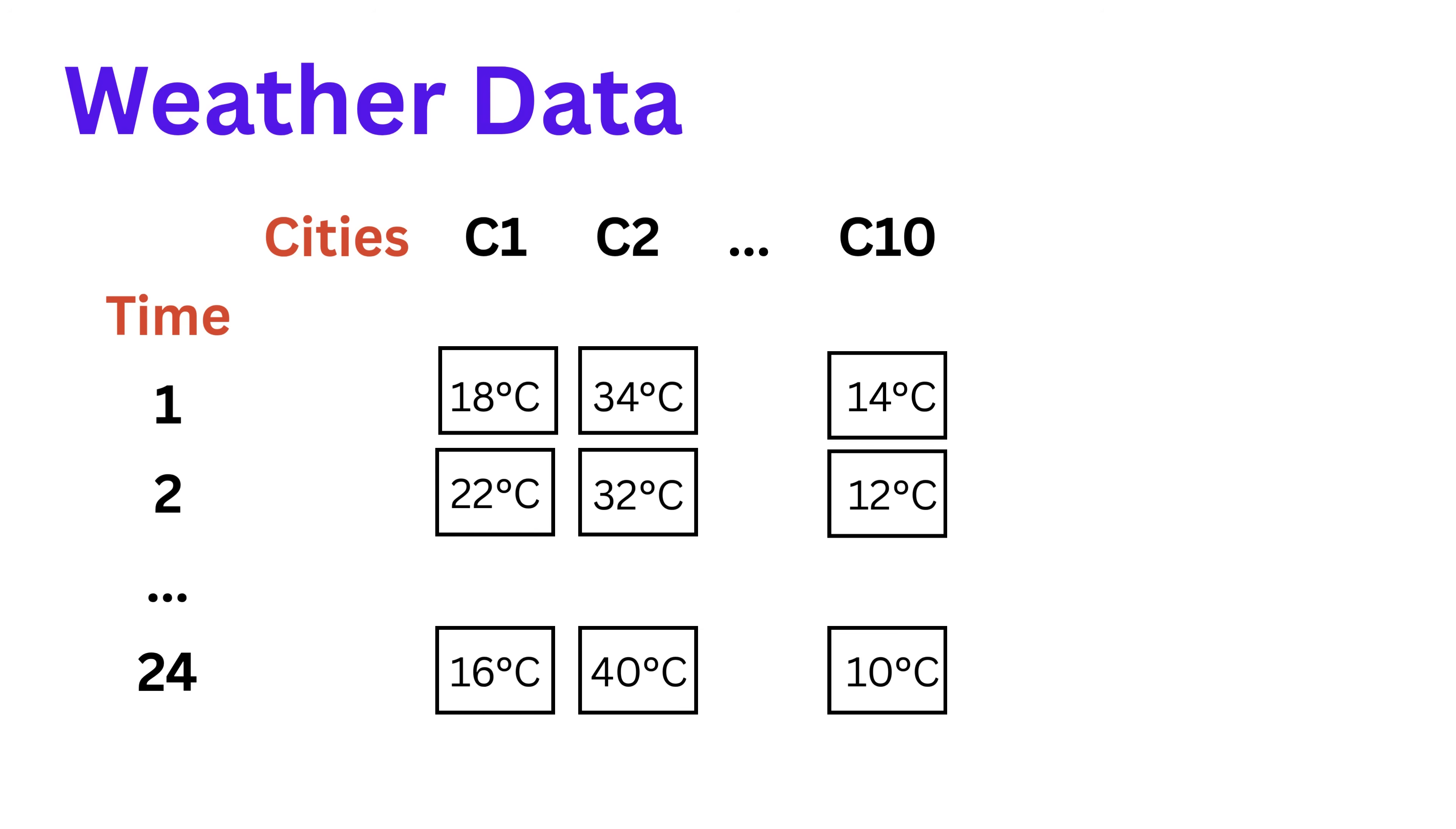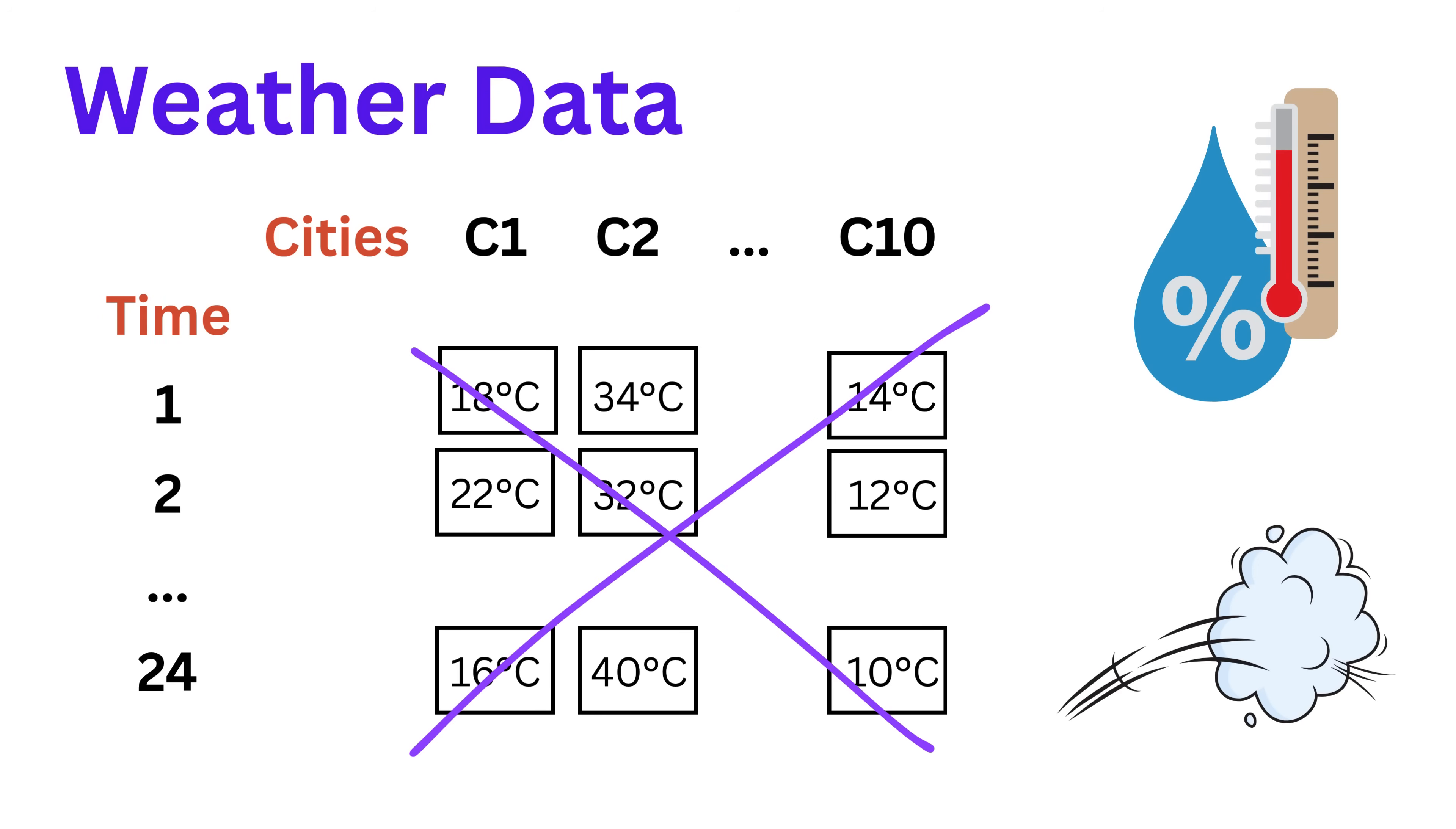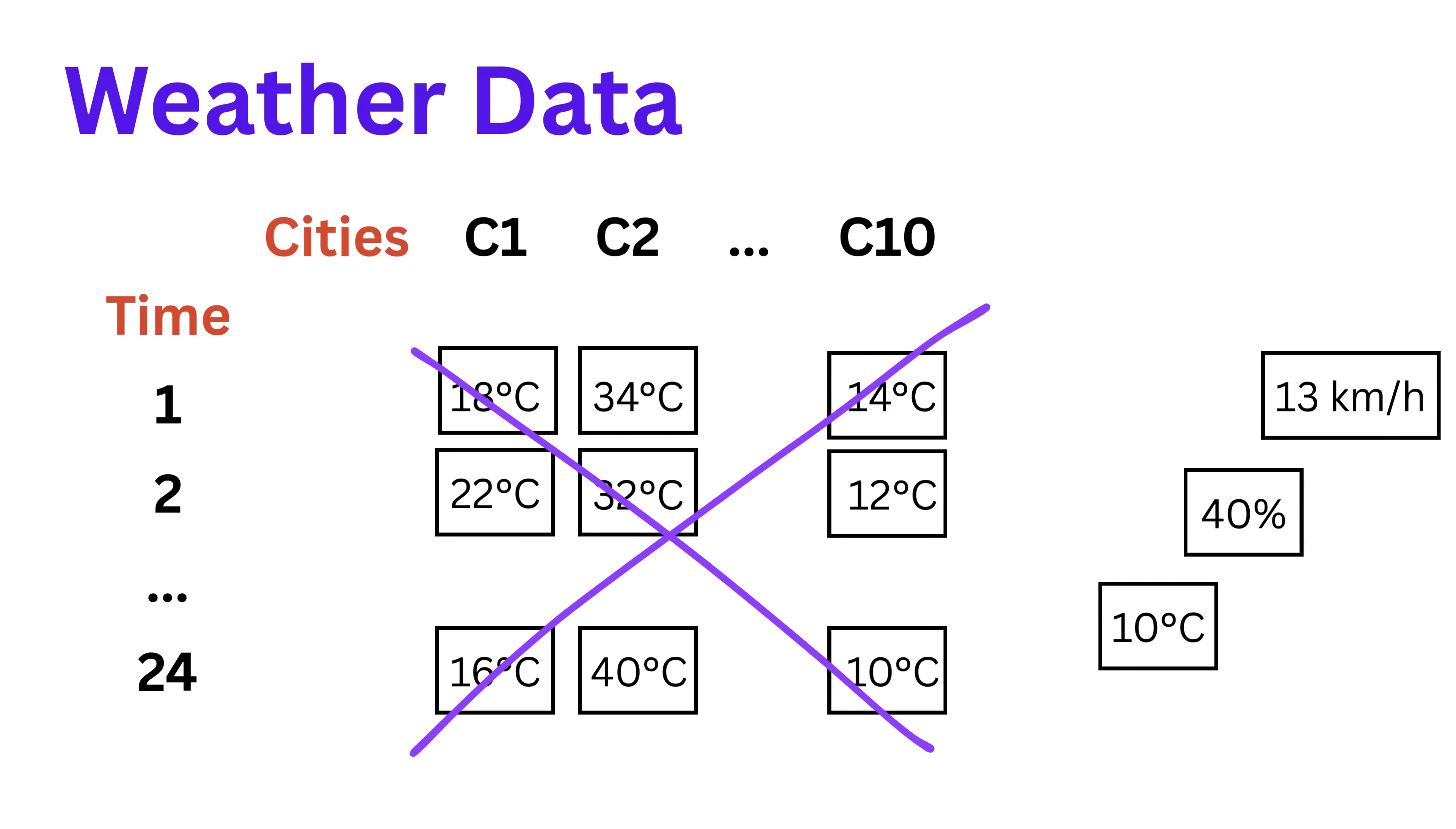But now let's say we also want to include other data like humidity and wind speed. Suddenly, each cell isn't just a single number. Now it's a bundle of three values. Temperature, humidity, and wind speed. So the data becomes a three-dimensional tensor, where the third dimension holds different weather features.